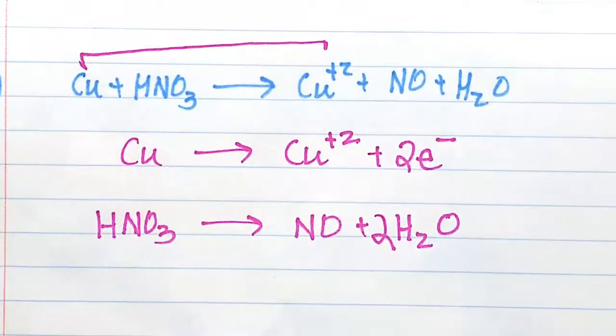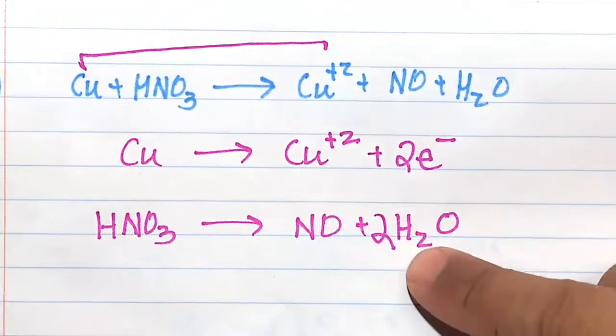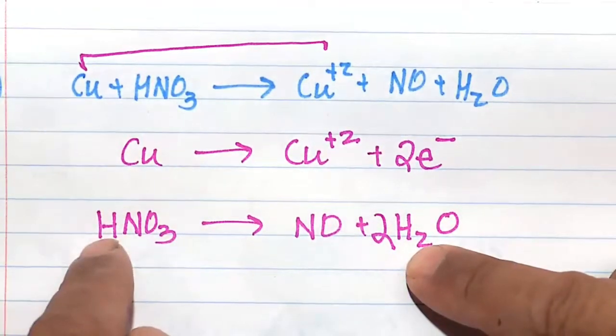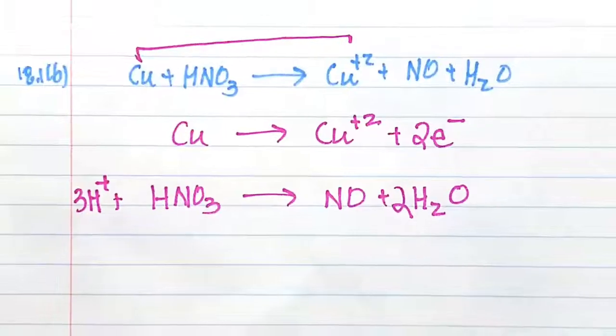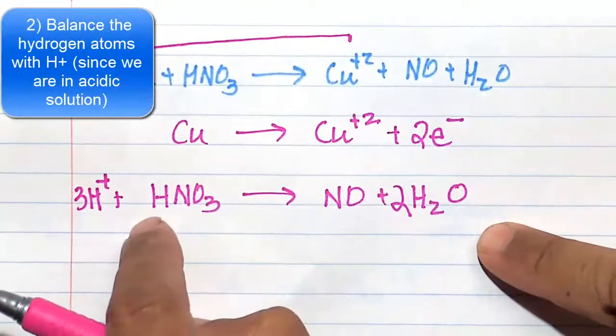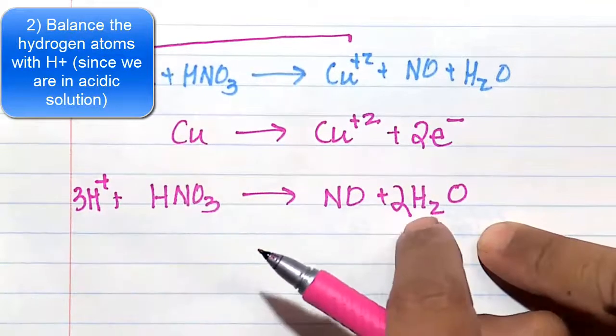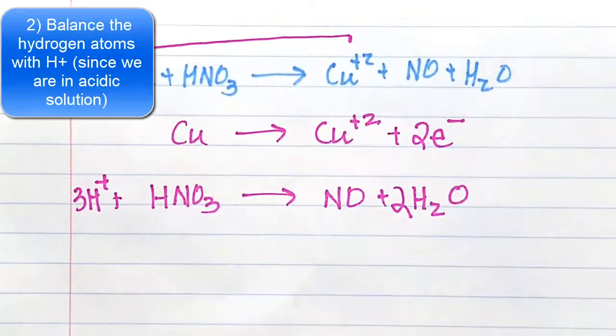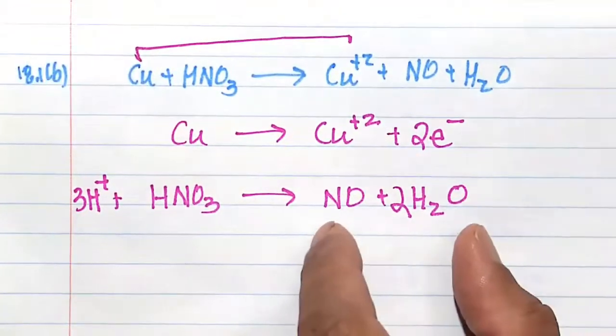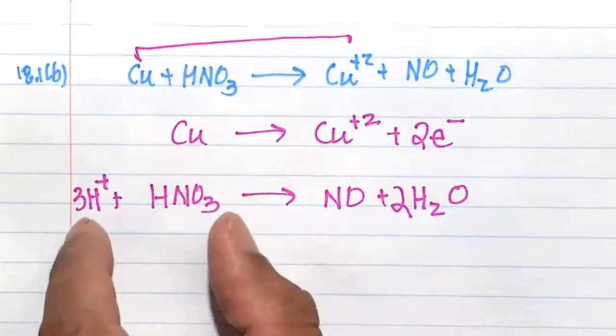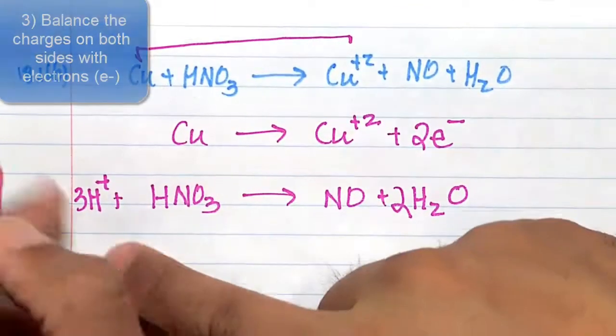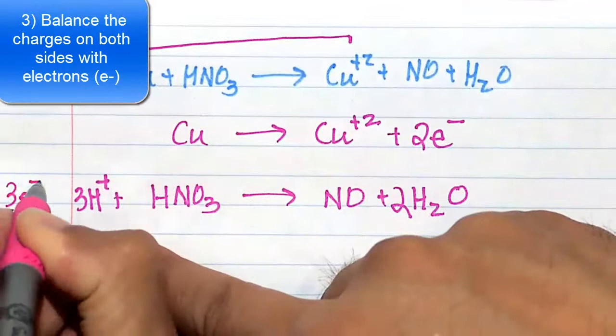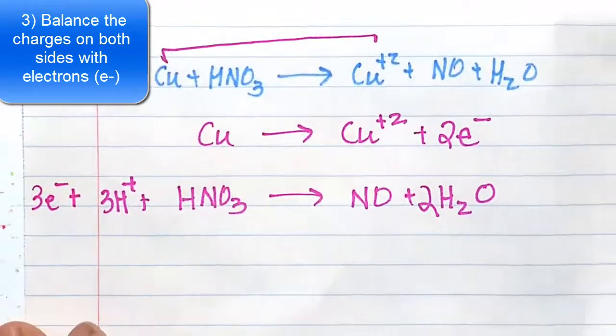Usually we want to balance the hydrogens last because we have H⁺ at our disposal. So here we have 4 hydrogens plus 1 hydrogen. So let's put 3H⁺ here. 3 hydrogen plus 1 hydrogen is 4. Now we'll balance the charge. Here we have 0 charge, and here we have a +3 charge. To balance out that charge, we'll add 3 electrons here on this side.